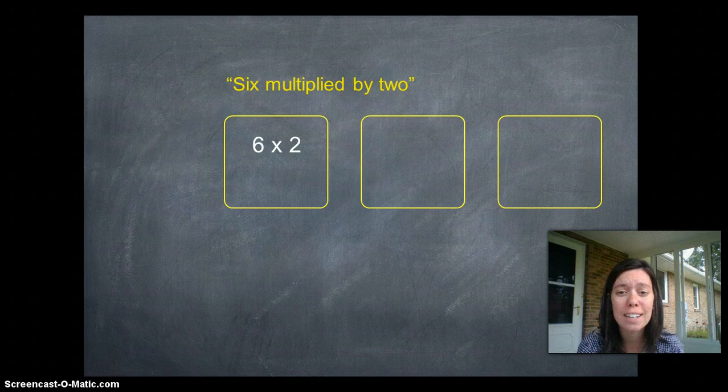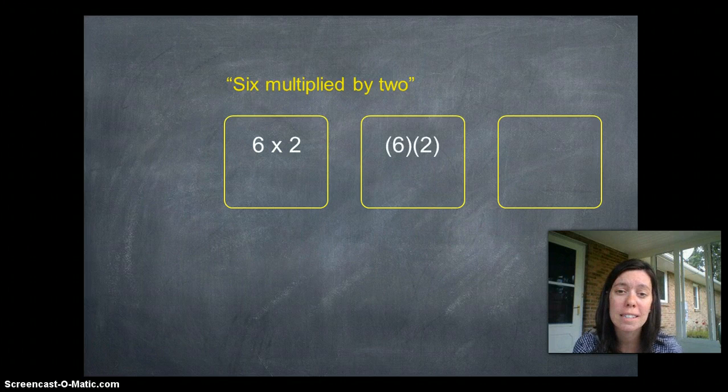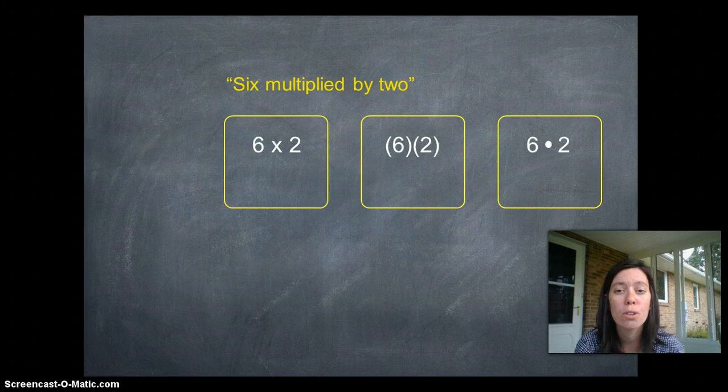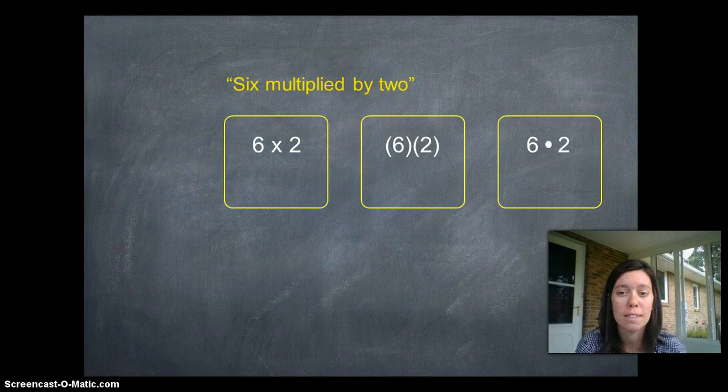So instead, we write it sometimes like this with the numbers in parentheses. Anytime you see numbers in parentheses, that means you're multiplying them together. Or sometimes we put a dot in the middle, and that dot shows multiplied by. It means the same thing as the cross.